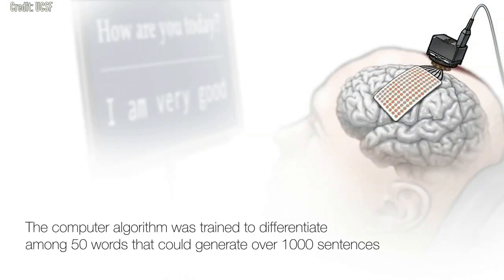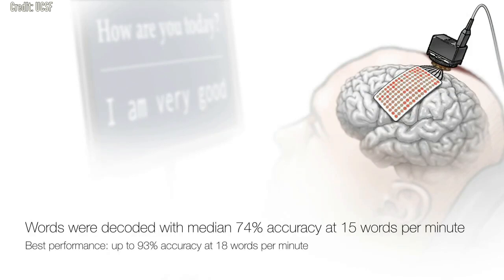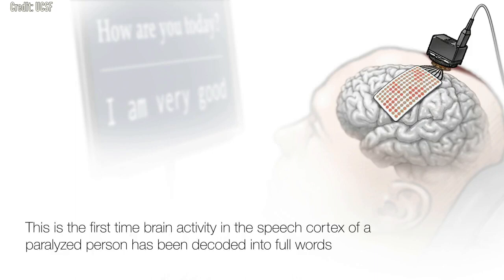The team found that the system was able to decode words from brain activity at a rate of up to 18 words per minute, with up to 93% accuracy. Contributing to the success was a language model Moses applied that implemented an autocorrect function, similar to what is used by consumer texting and speech recognition software.